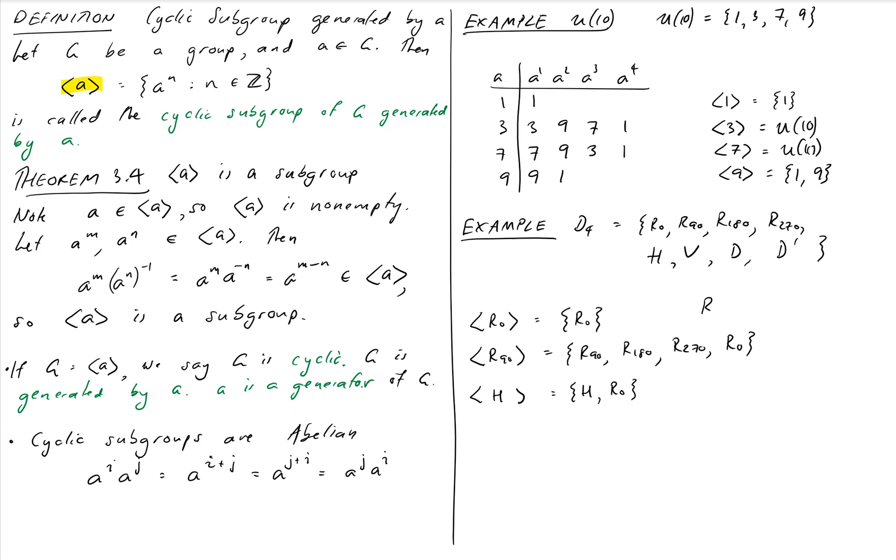The only one that I'm missing here is R180 and that will be {R180, R0}.